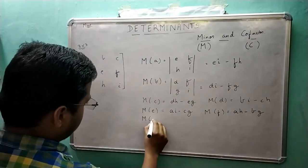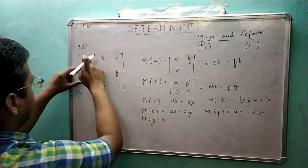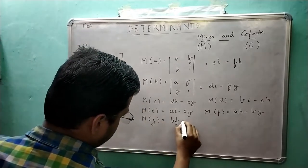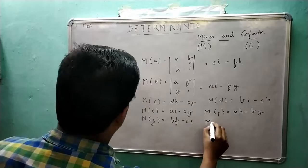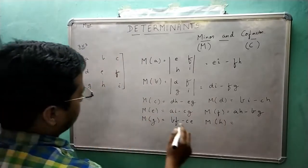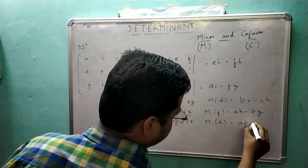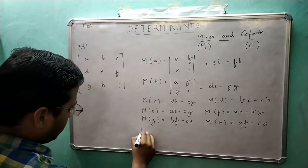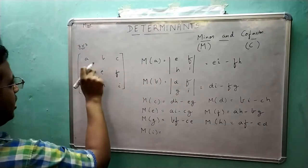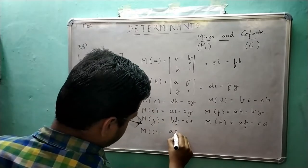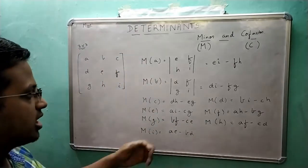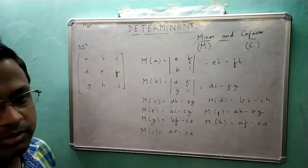The minor of G will be: forgetting the relevant row and column, B×F minus C×E. The minor of H will be A×F minus C×E. The minor of I will be A×E minus B×D. These values are the minors of all the elements.